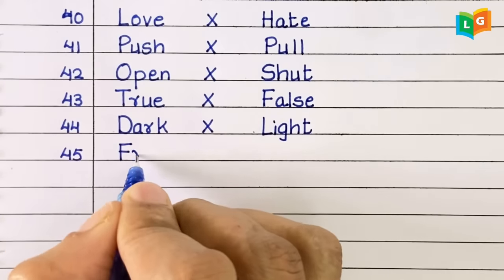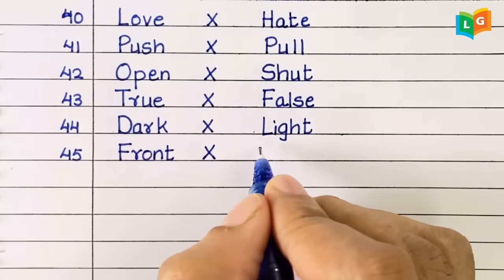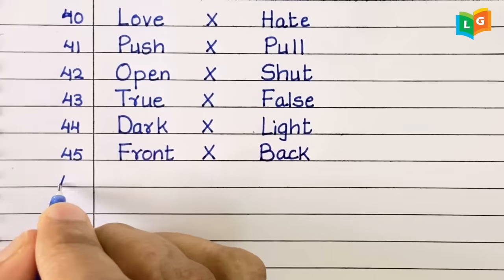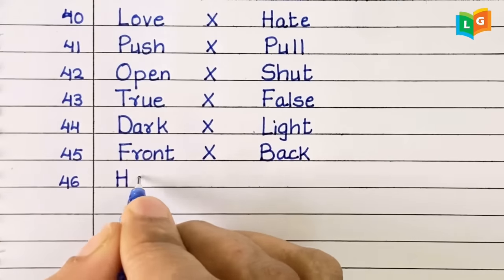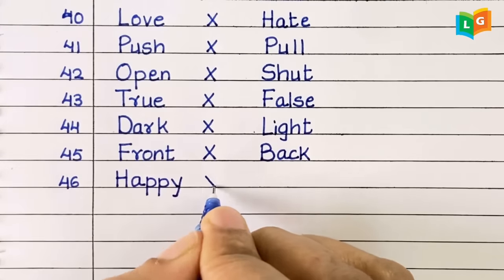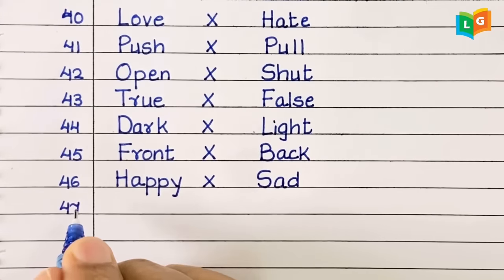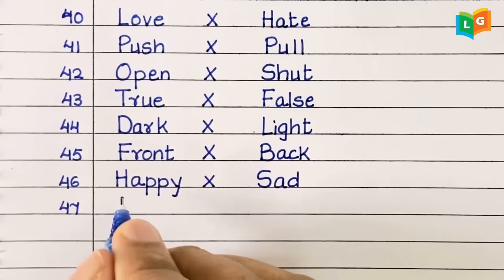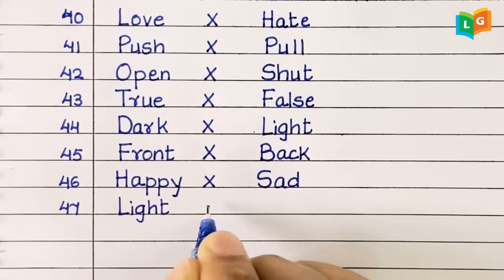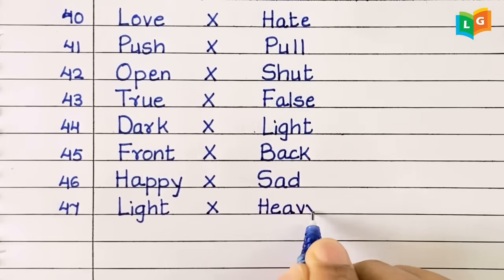Forty-five, front, back. Forty-six, happy, sad. Forty-seven, light, heavy.